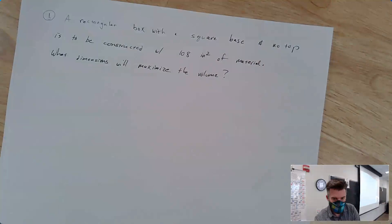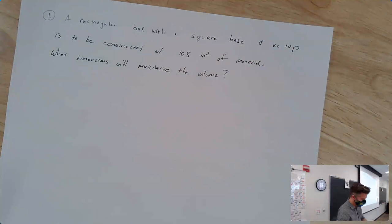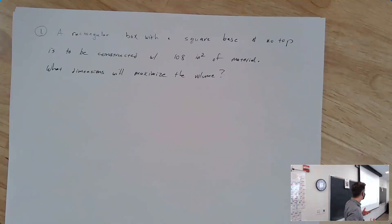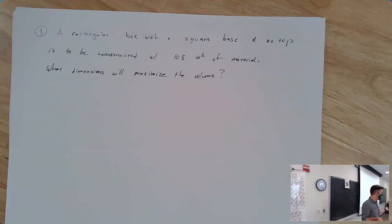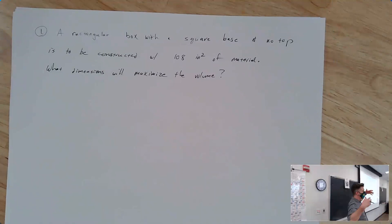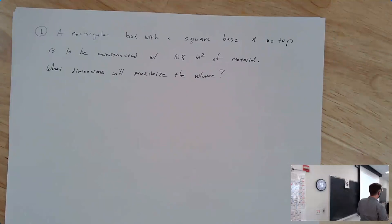So there's kind of a process for doing optimization problems. It's kind of similar to when we did related rates, in that you draw a picture, find out what's changing, write an equation, differentiate both sides. But it's different in that here we're going to be thinking about what we want to maximize or minimize, finding a constraint, and doing a couple of things.